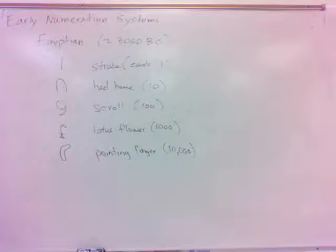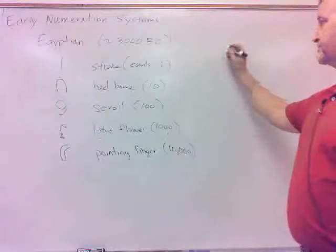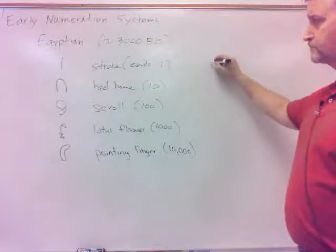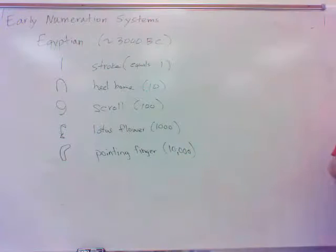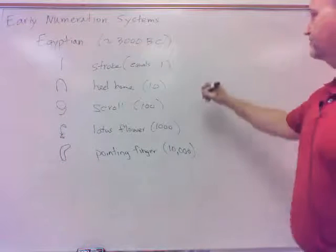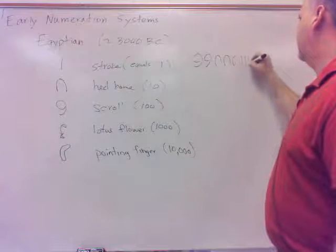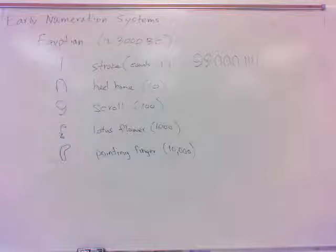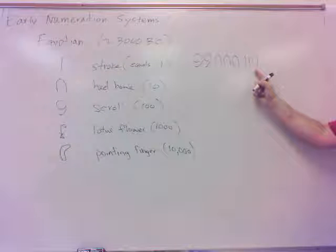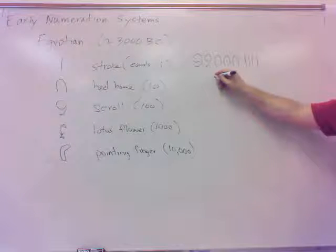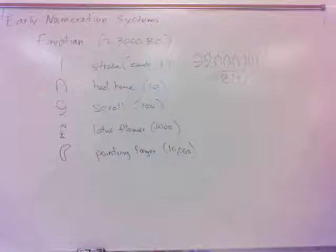So anyway, these were their symbols, or some of their symbols. Now, the good thing about it was, in their system, all you had to do was add up the symbols that they had, and that was your number. For example, if I had two scrolls, three heel bones, and four tally marks or strokes, that's what? Scrolls are 100, heel bones are 10, those are ones, so 234. So their system was easy in that regard. You just add up the symbols. In other words, they didn't have any place value.